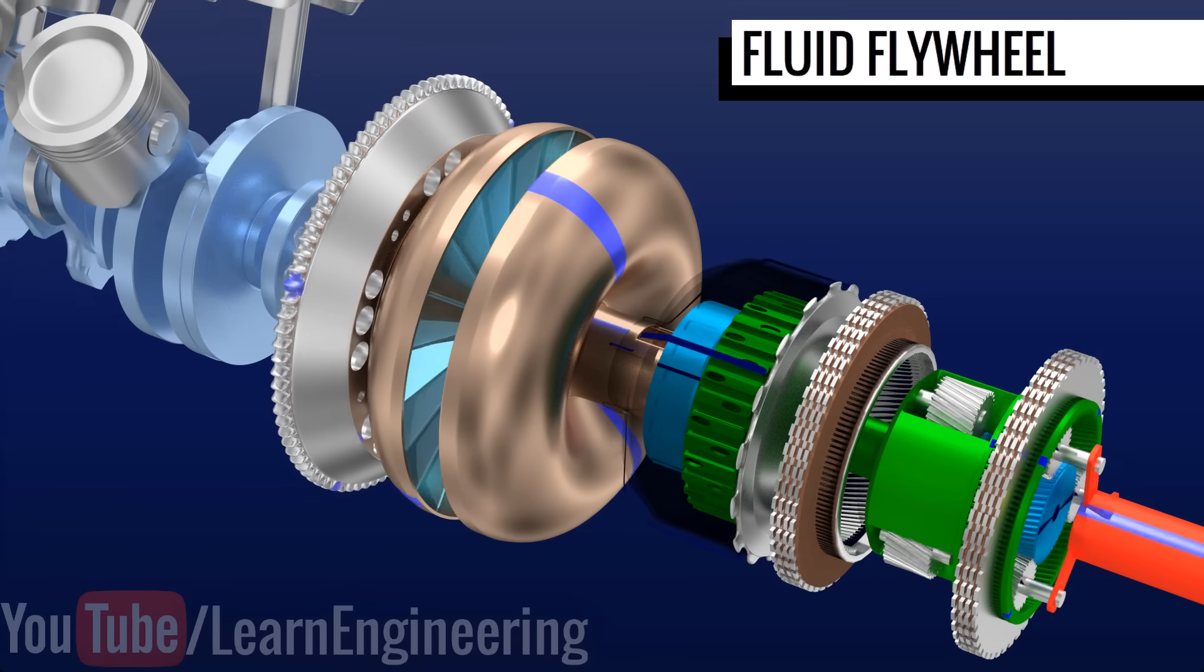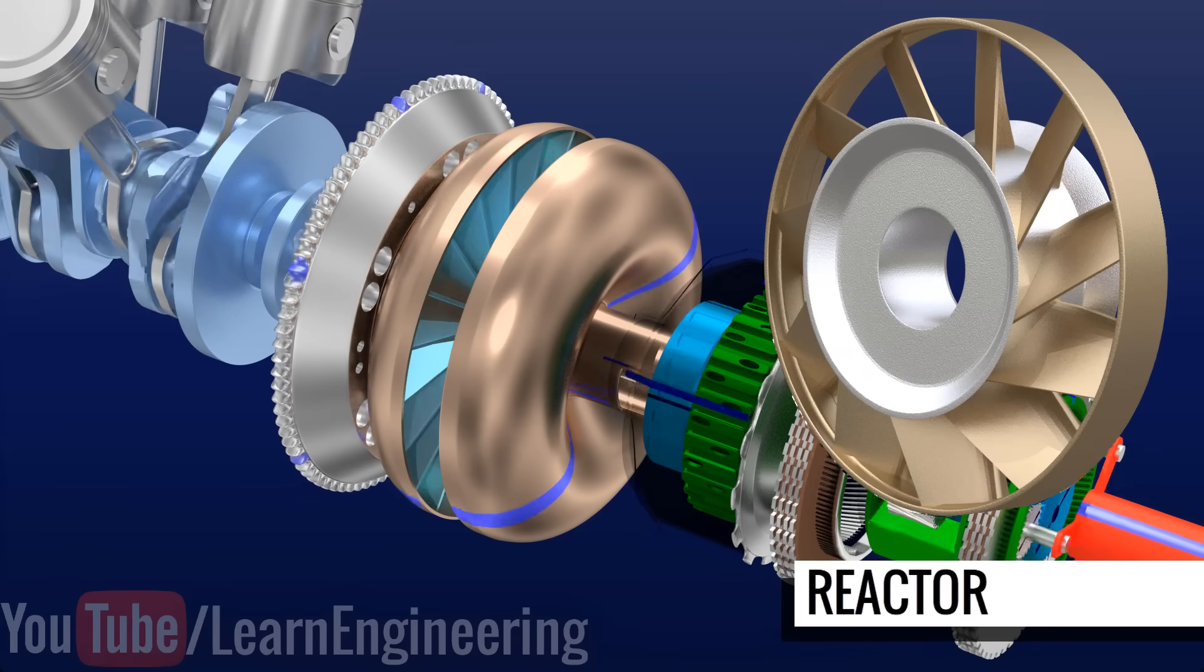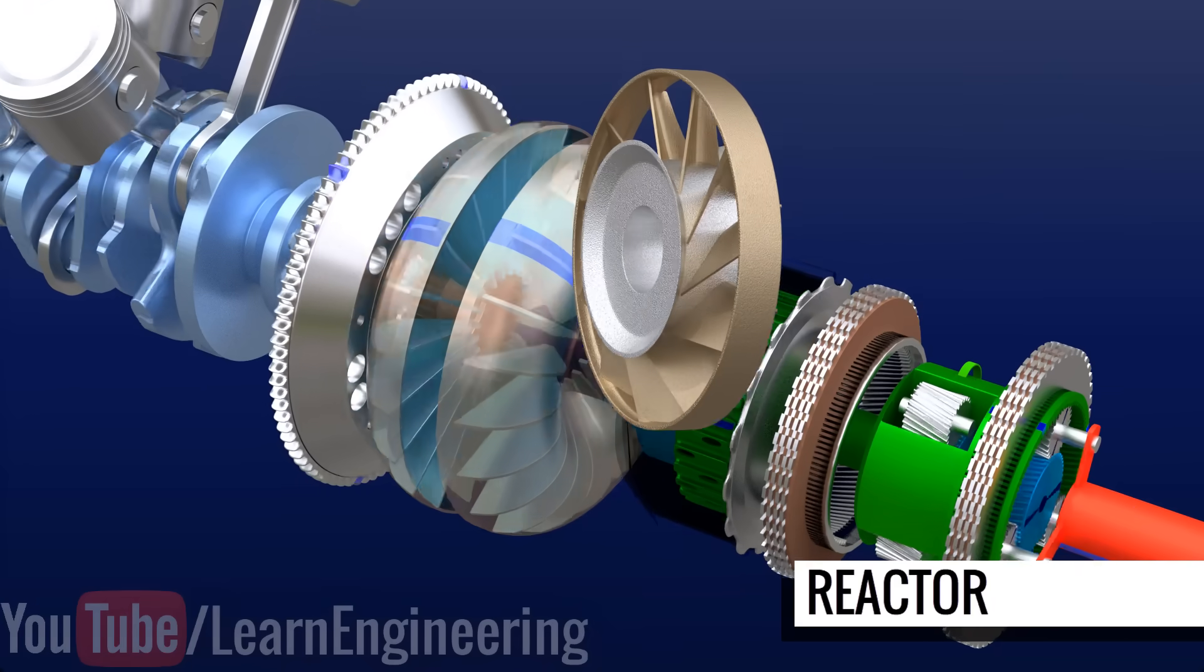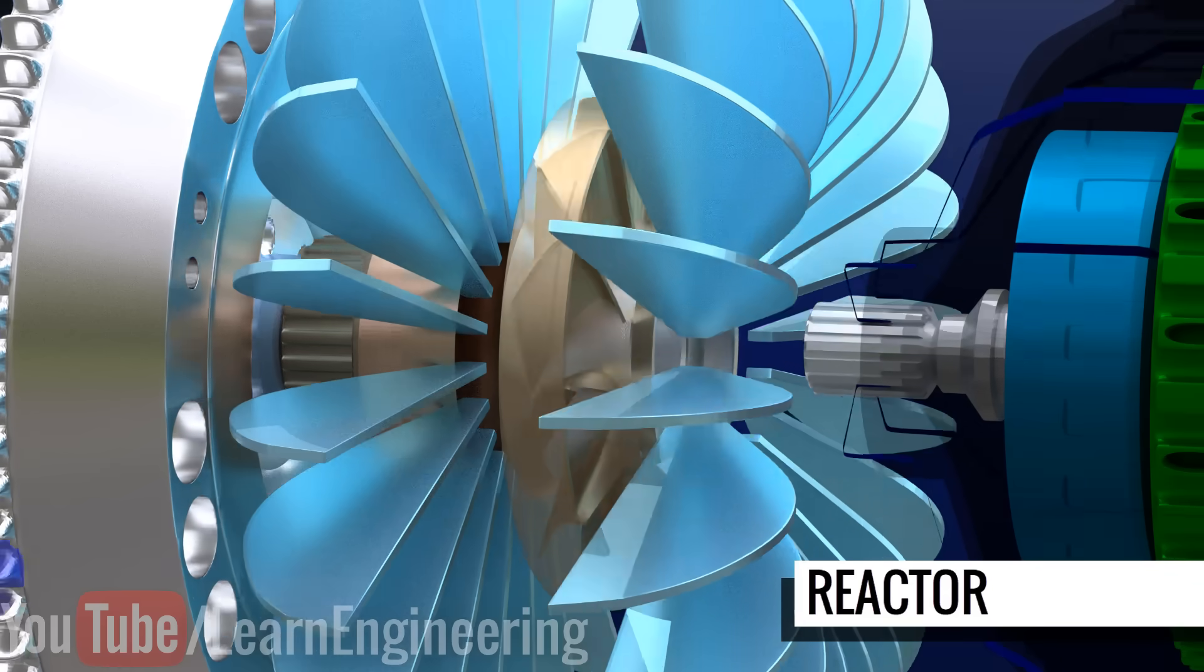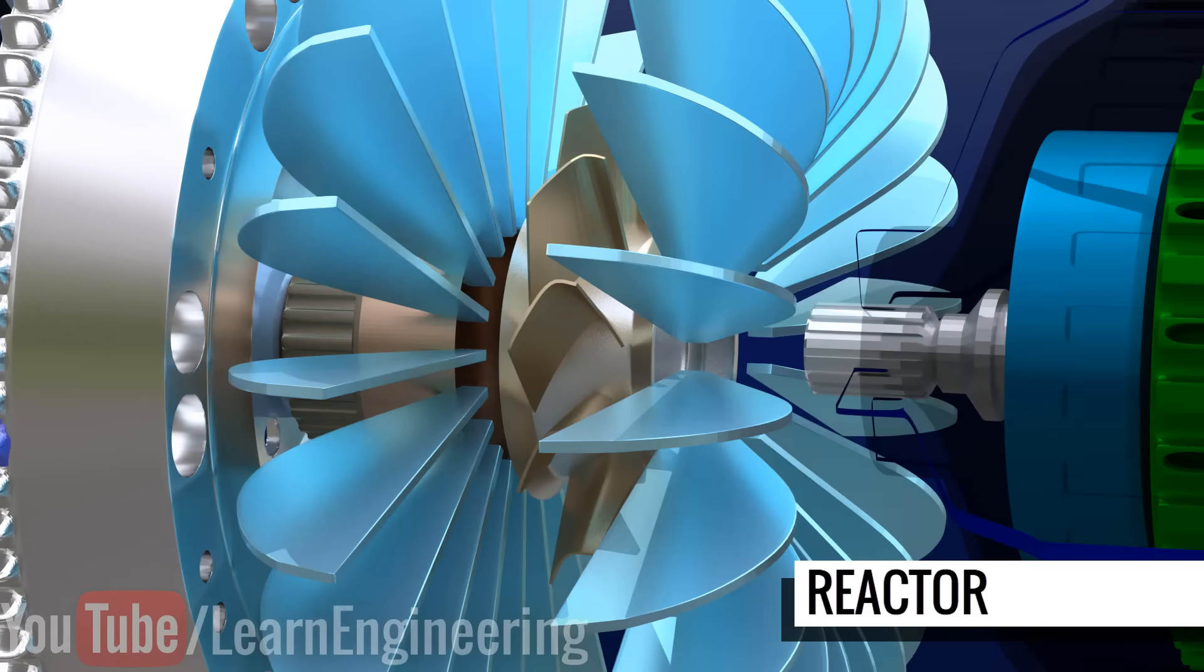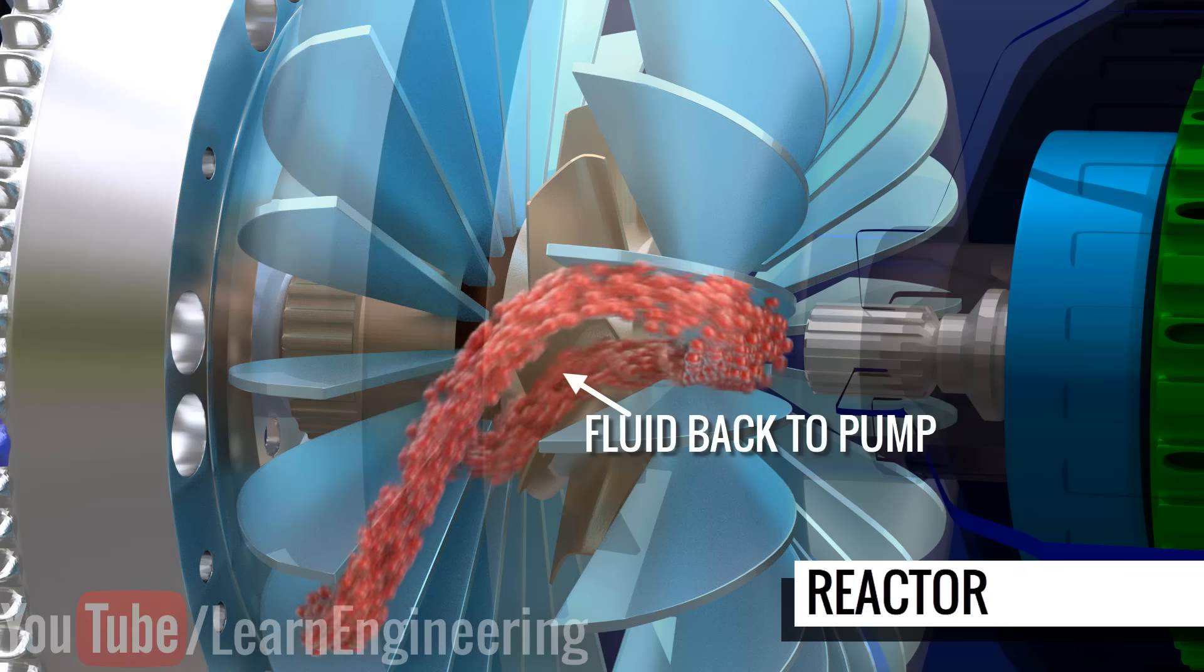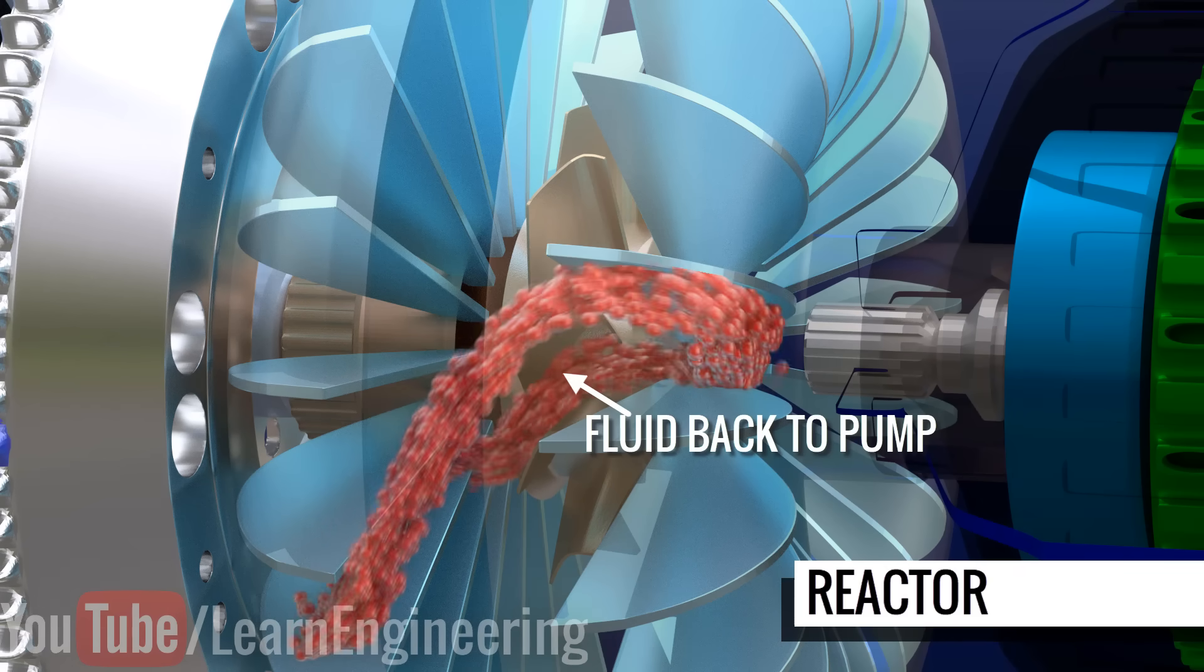When we introduce a component called a reactor between the turbine and the pump, it becomes a torque converter. One of the main duties of the reactor is to send the fluid from the turbine back to the pump efficiently. We will discuss more functions of the reactor later.